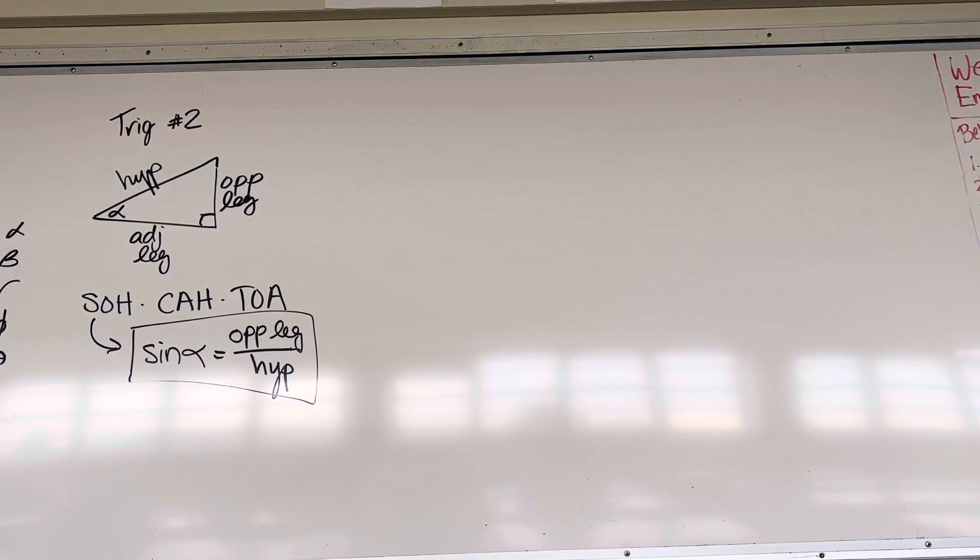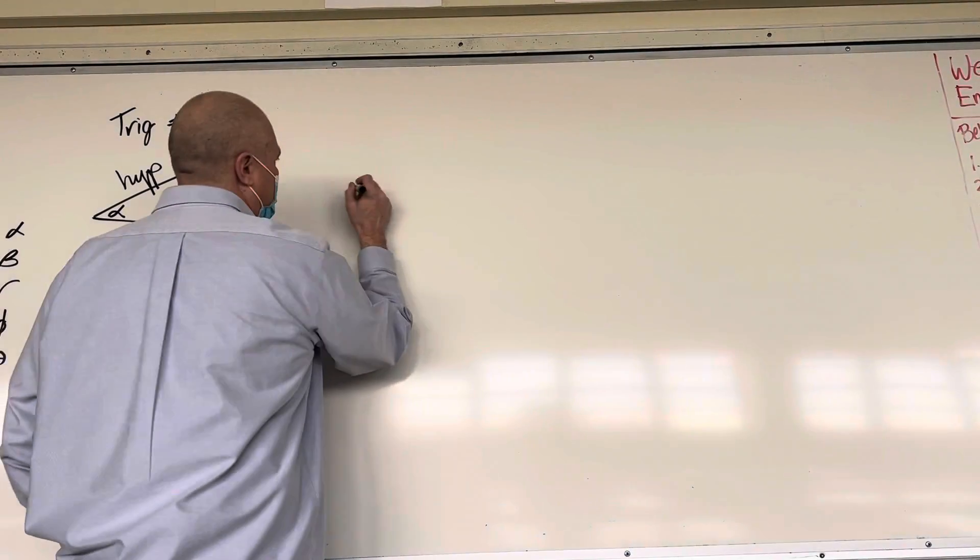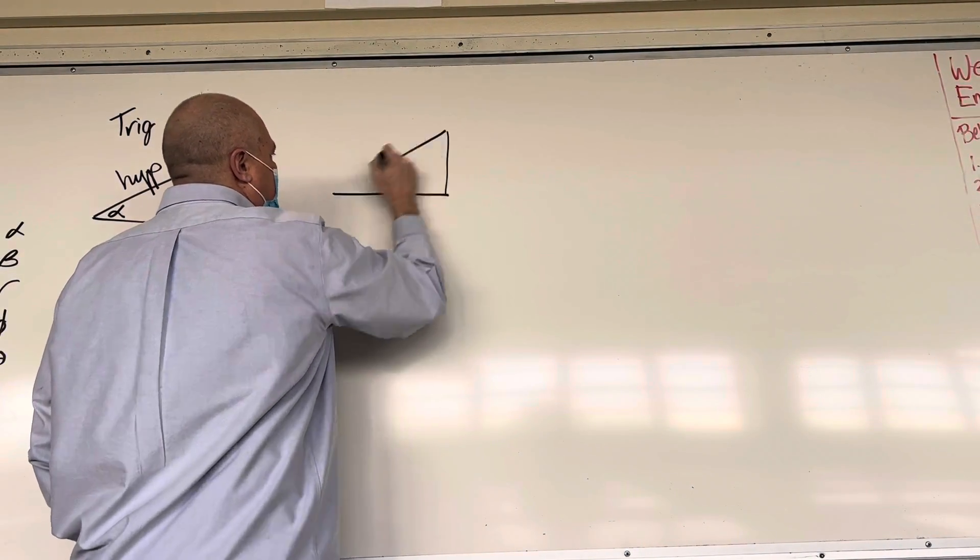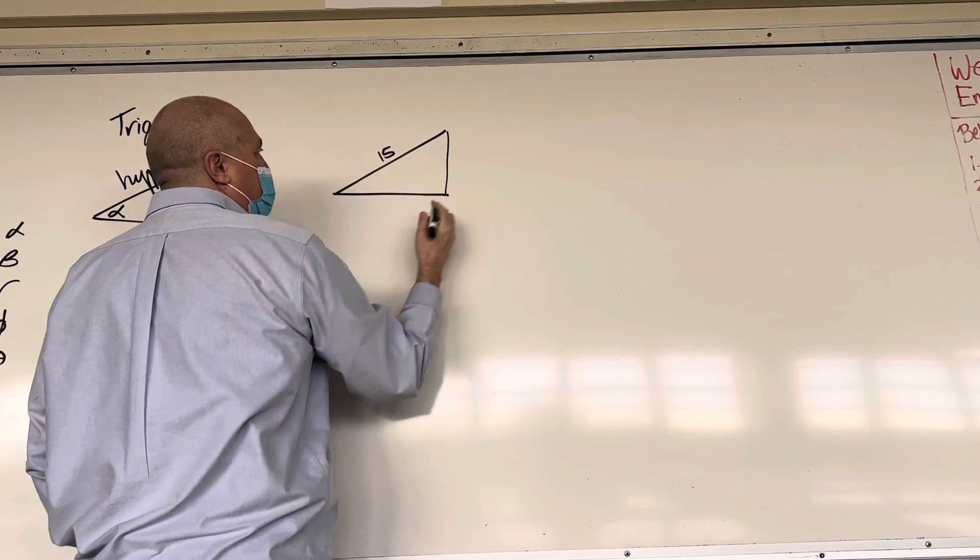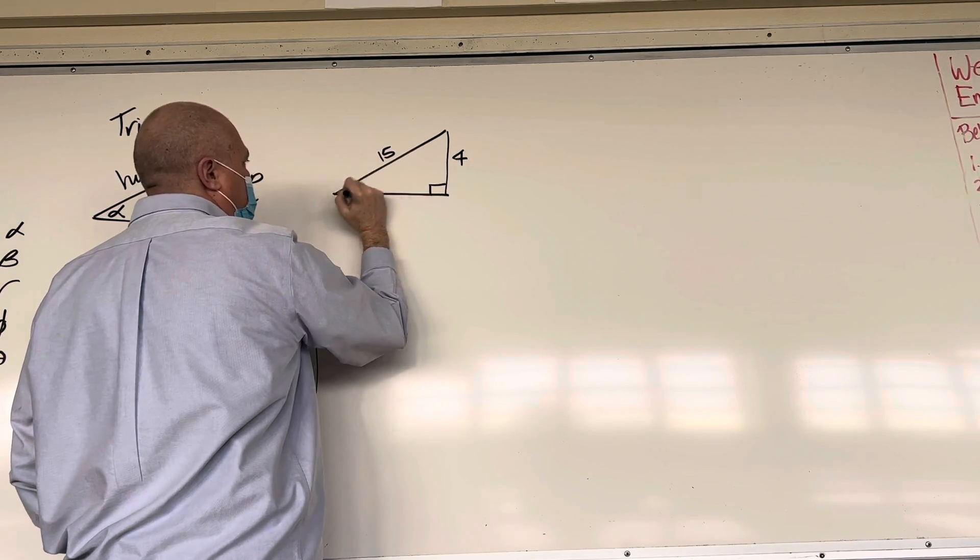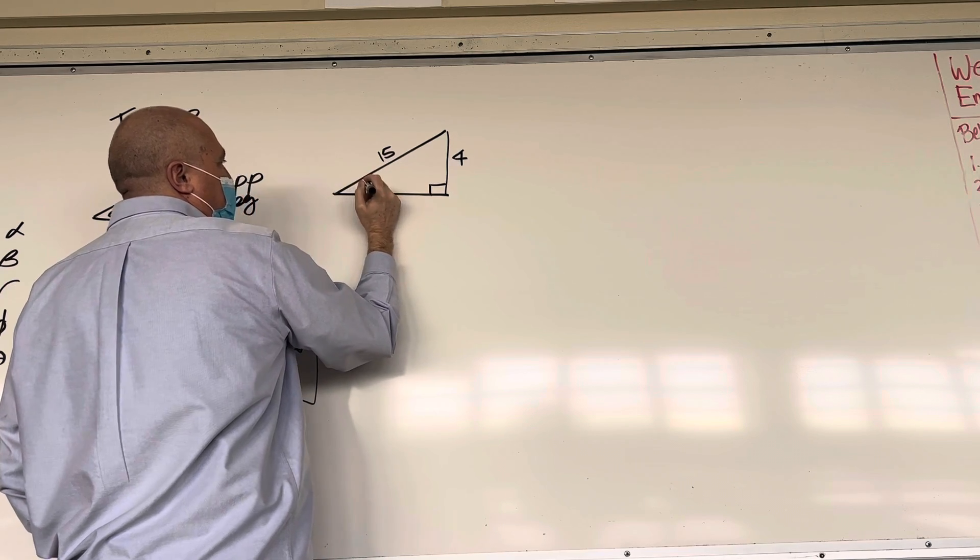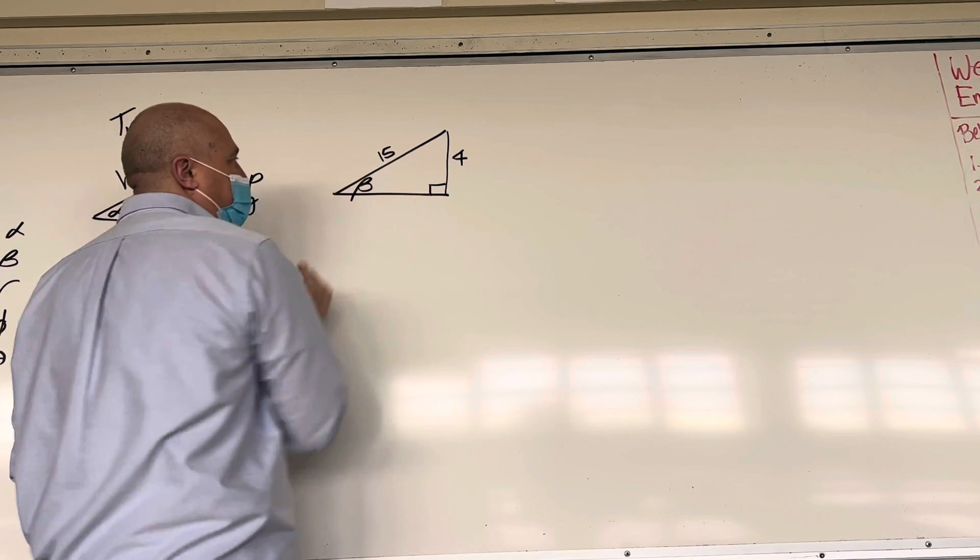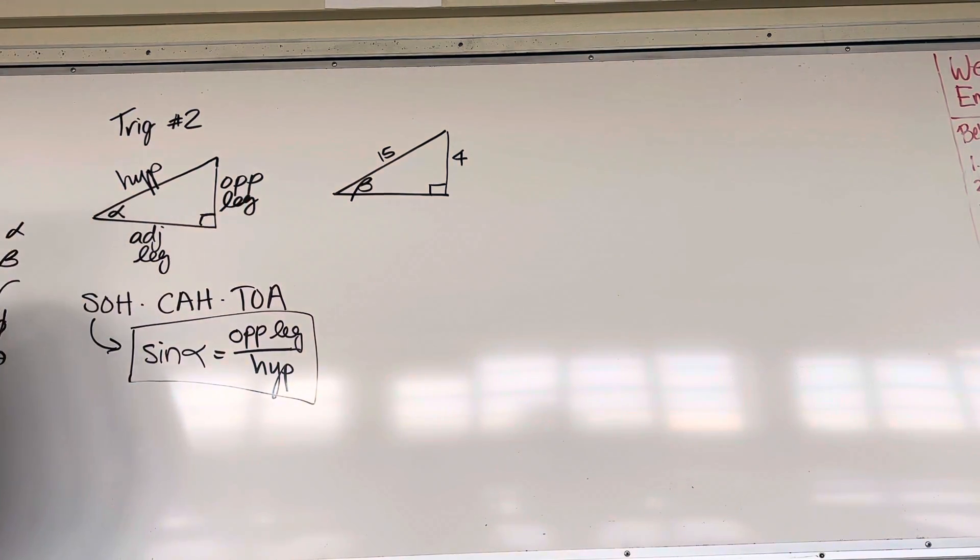Now let's apply it to a problem. So let's start with the first one here. We'll use 15, 4, and alpha. So let's draw another right triangle. The hypotenuse is 15 long. This leg over here is 4 long. It's a right triangle, and we want to find this angle, and for kicks, let's call it beta. So we're just using a different variable. It doesn't matter.